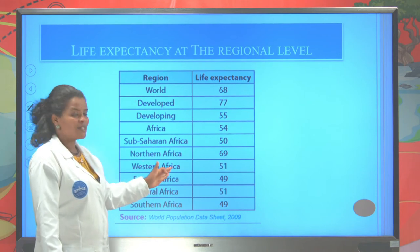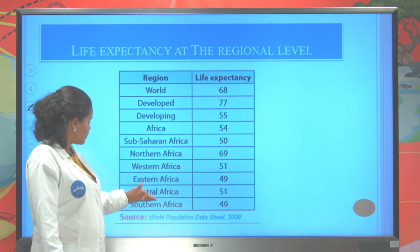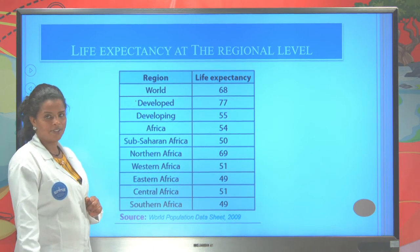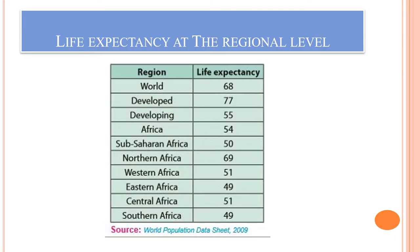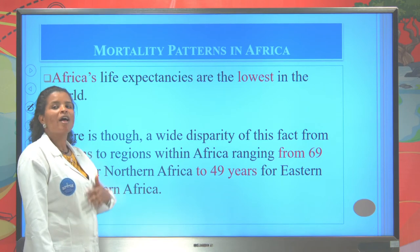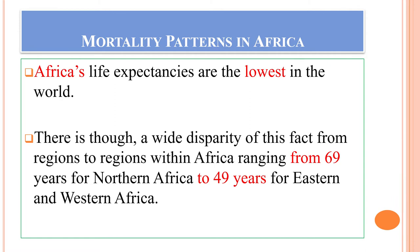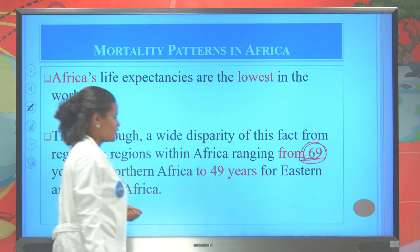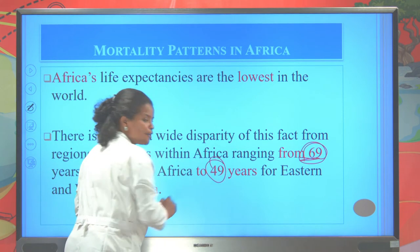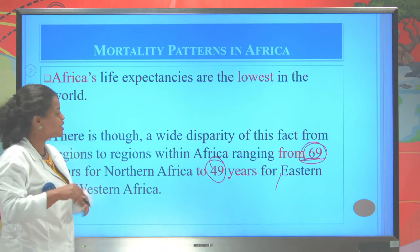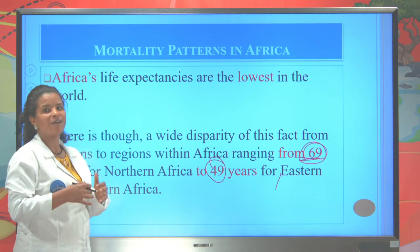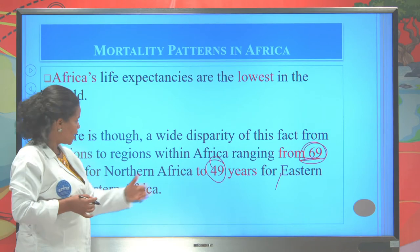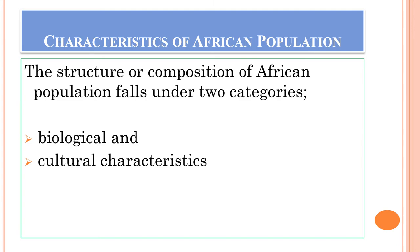Western Africa has a life expectancy of only 51 years, Eastern Africa 41 years, Central Africa 51 years, and Southern Africa 49 years. We conclude that almost all regions of Africa have short life expectancy because they are underdeveloped. North Africa has the longest life expectancy at 69 years. Eastern Africa is the more populous region — fertility rate is very high — but its life expectancy is very low at only 49 years. Ethiopia is found in this region.